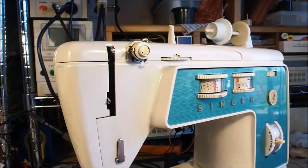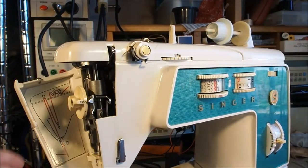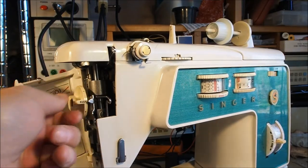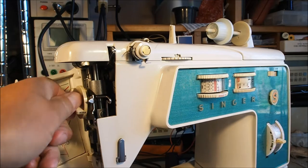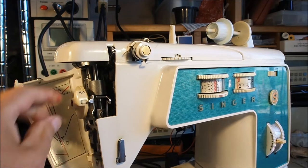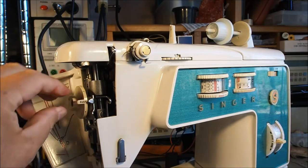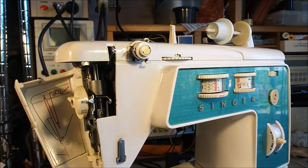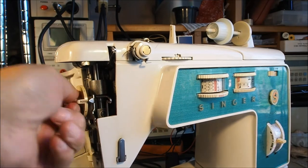Also, your thread tension is here. Behind this plate, you've got presser foot pressure - lower pressure here, right down to darning which is hardly any pressure, then normal, extra pressure, and maximum pressure on the presser foot.